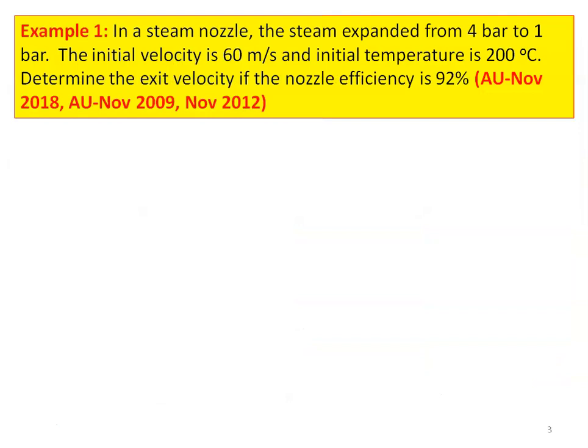This is example number 1 from the November 2018, November 2009, November 2012 question paper. In a steam nozzle, the steam expanded from 4 bar to 1 bar. The initial velocity is 60 meters per second and the initial temperature is 200 degree Celsius. Determine the exit velocity if the nozzle efficiency is 92 percent.